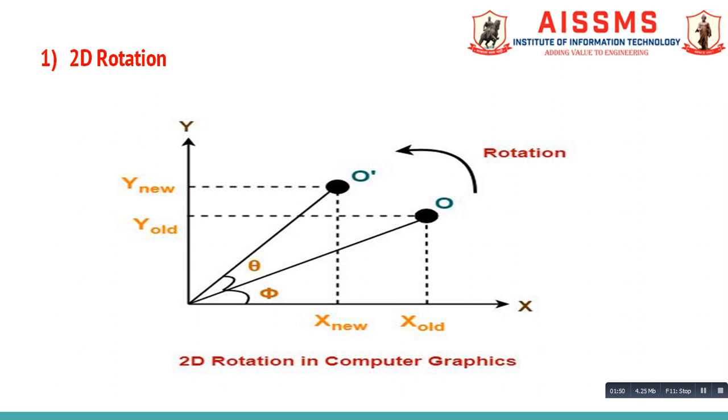The same thing can be graphically represented by this figure. Here X_old is X coordinate of object O before rotation. X_new is X coordinate of object O after rotation. Y_old is Y coordinate of object O before rotation. Y_new is Y coordinate of object O after rotation. Phi is initial angle of object with respect to origin before rotation. And theta is the angle of rotation.